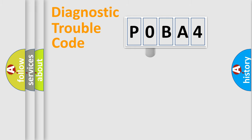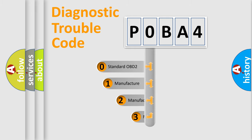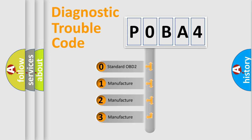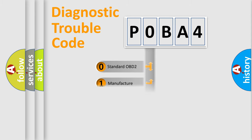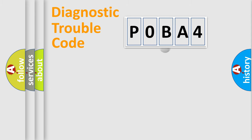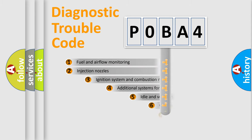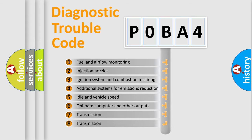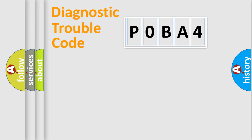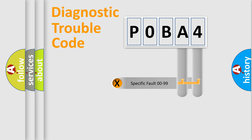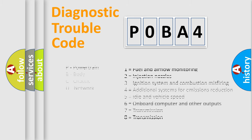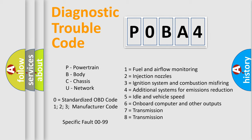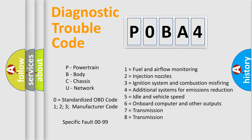This distribution is defined in the first character of the code. If the second character is expressed as zero, it is a standardized error. In the case of numbers 1, 2, or 3, it is a manufacturer-specific expression of a car-specific error. The third character specifies a subset of errors. This distribution is valid only for the standardized DTC code, and only the last two characters define the specific fault of the group.